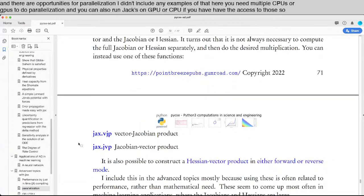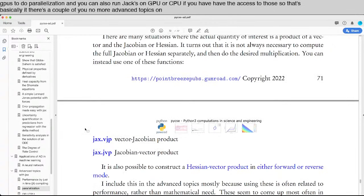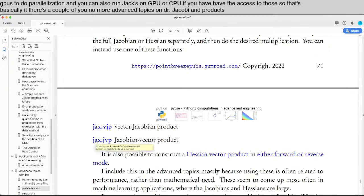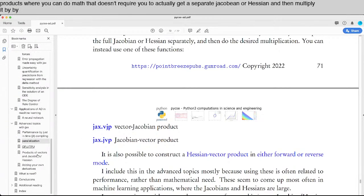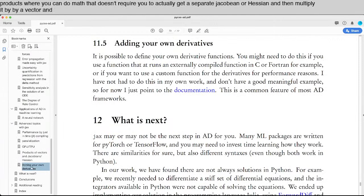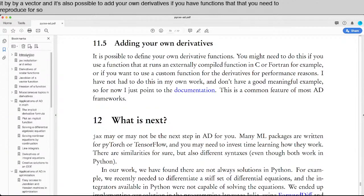So that's basically it. There's a couple more advanced topics on vector Jacobian products or Jacobian vector products where you can do math that doesn't require you to actually get a separate Jacobian or Hessian and then multiply it by a vector. And it's also possible to add your own derivatives if you have functions that you need derivatives for. So that's it in a nutshell.